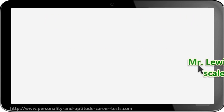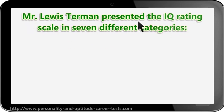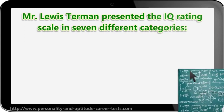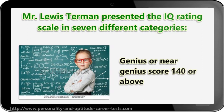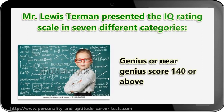Lewis Terman presented the IQ Rating Scale in seven different categories. Genius or Near Genius: Score 140 or above.